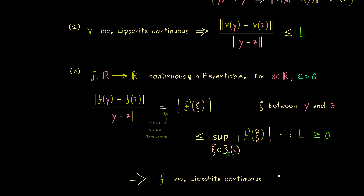This is very helpful because it is what we can use in our discussion about ordinary differential equations. This whole proof also works similarly in higher dimensions. In the next video we can use that and prove that for initial value problems where the function v is locally Lipschitz continuous, we have indeed a uniqueness of the solutions. Let's meet there — see you soon. Bye bye.